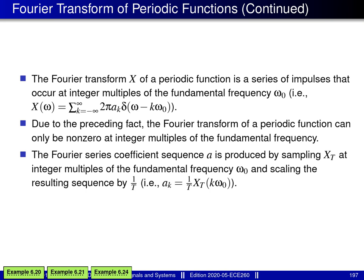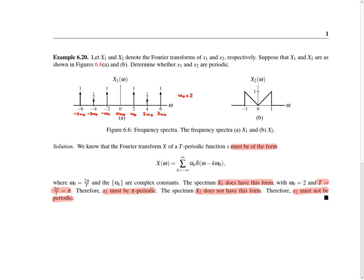I'd like to consider some examples using these results, beginning with example 6.20. We're given two functions, little x1 and little x2, with corresponding Fourier transforms big X1 and big X2. Big X1 has the graph shown in figure a, and big X2 has the graph shown in figure b. We're asked to determine whether little x1 and little x2 are periodic, which depends on whether their Fourier transforms have the impulse-train form.